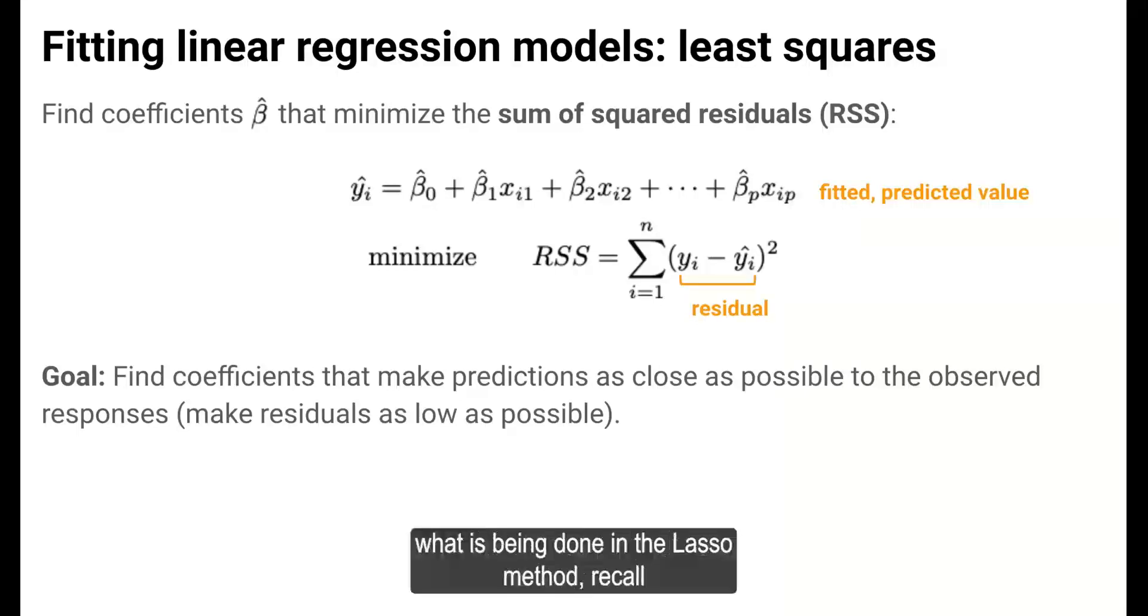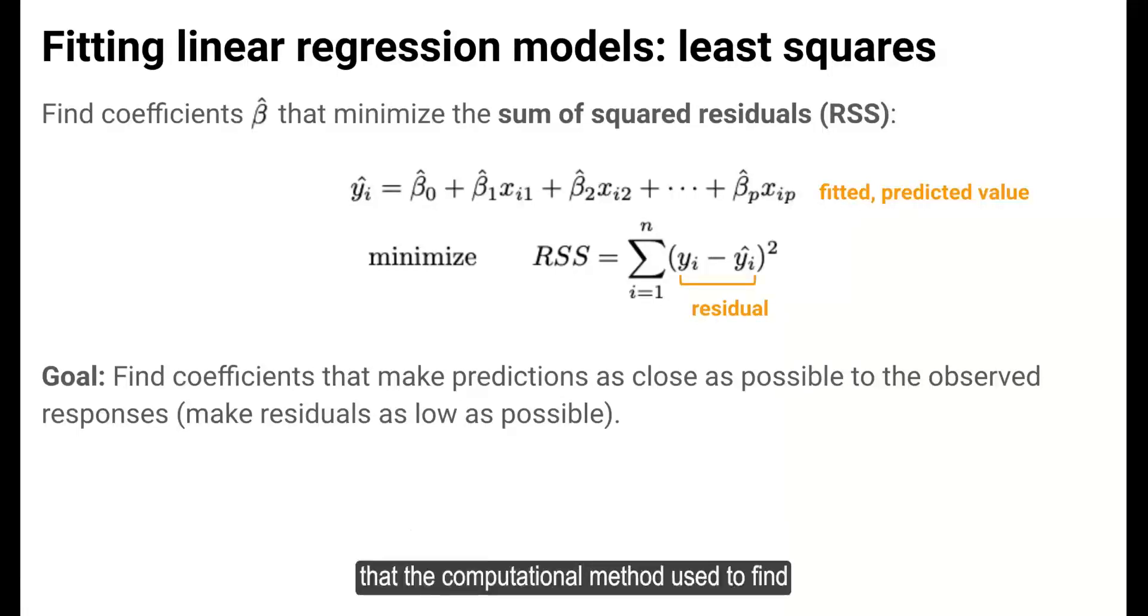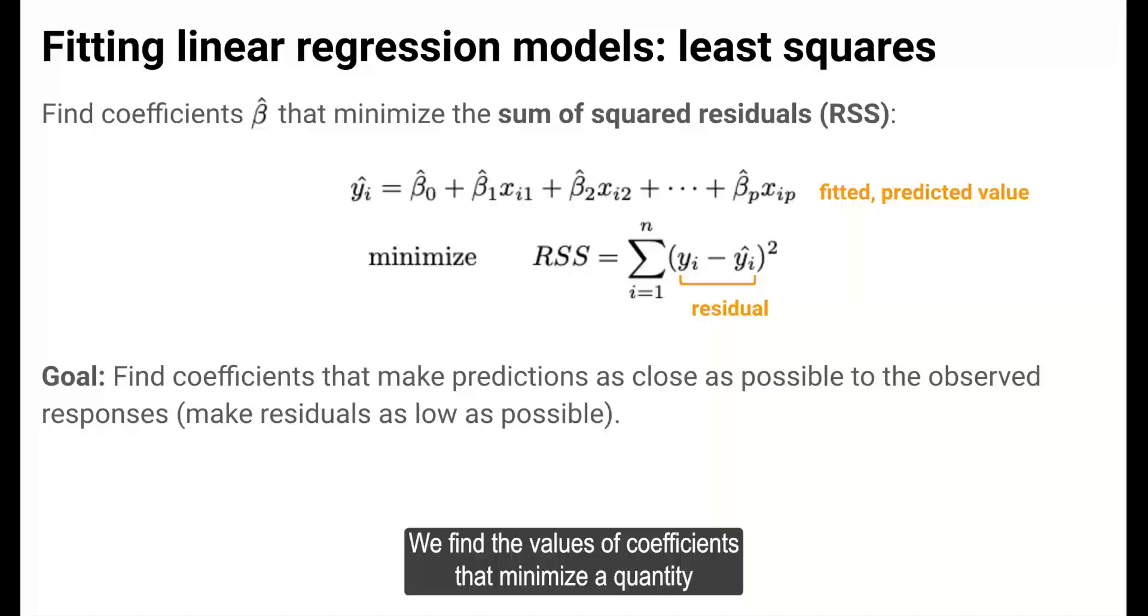To motivate what is being done in the LASSO method, recall that the computational method used to find the beta coefficients in linear regression models was called least squares. In least squares, we find the values of coefficients that minimize a quantity called the sum of squared residuals, or RSS.